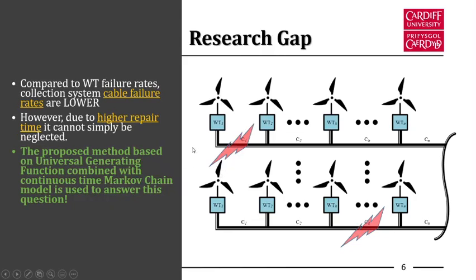This slide shows the existing research gap. In general, cable failure rates are very low compared to wind turbine failure rates, but the repair time is very high. Most of the literature addressing various reliability-oriented problems in offshore wind farms did not include the intra-array cable section into account, assuming its impact is very minimal. However, this is only valid for small collection systems, probably less than 100 megawatts of radial collection systems. Including the network reliability in the reliability evaluation is not straightforward because there is a dependency on the network for a radial system.